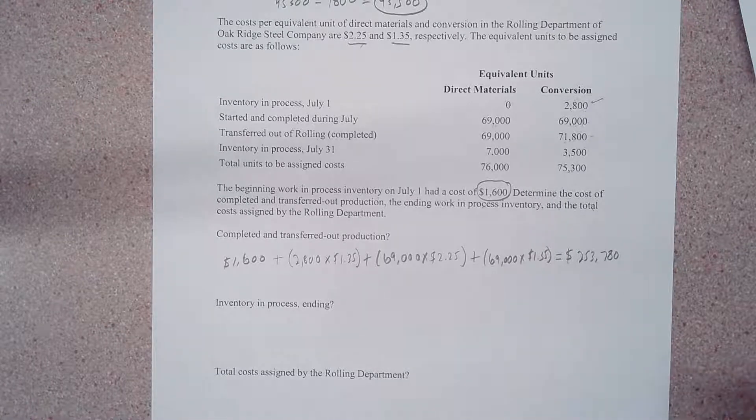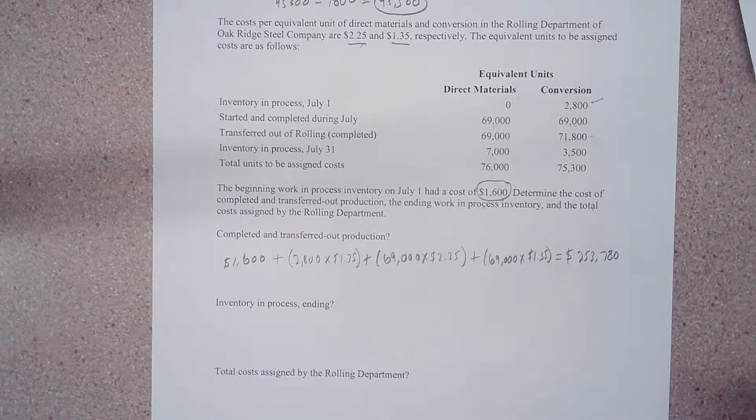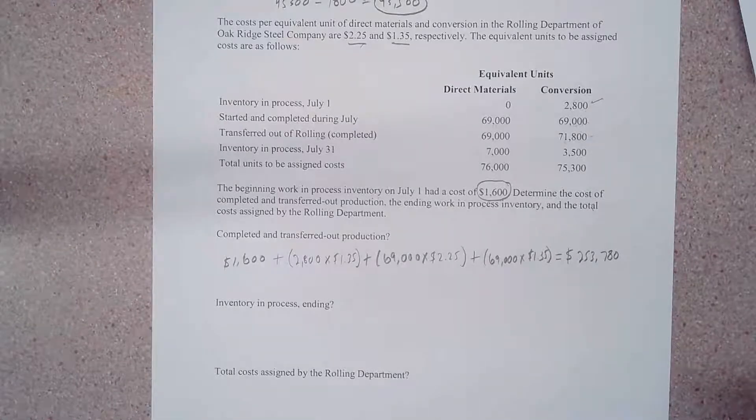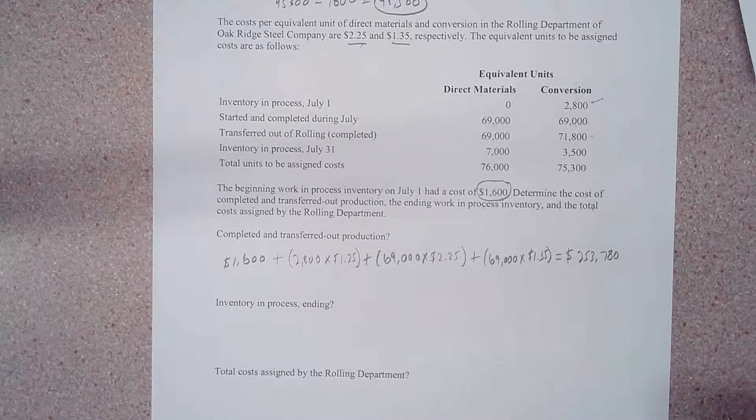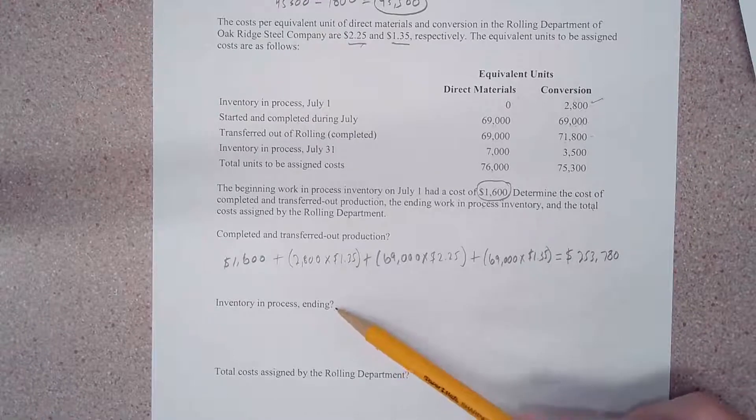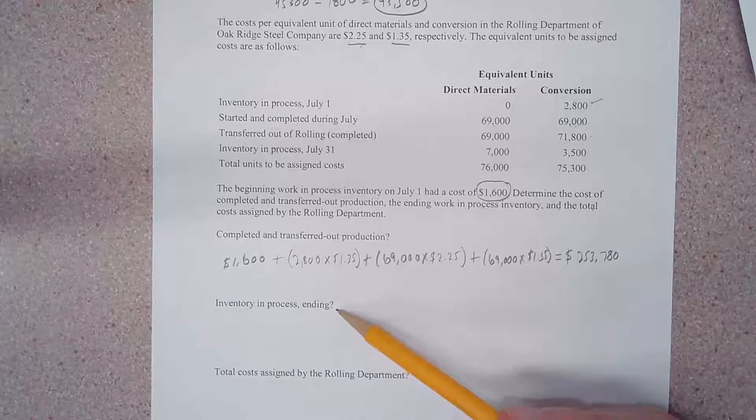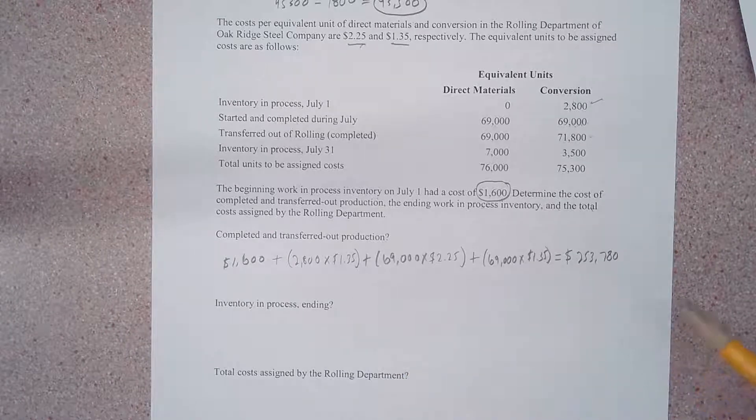Alright, so we just did part of this question - one-third of it - completed and transferred out of production from the rolling department. Now we look here, it says 'what is inventory in process, ending?'